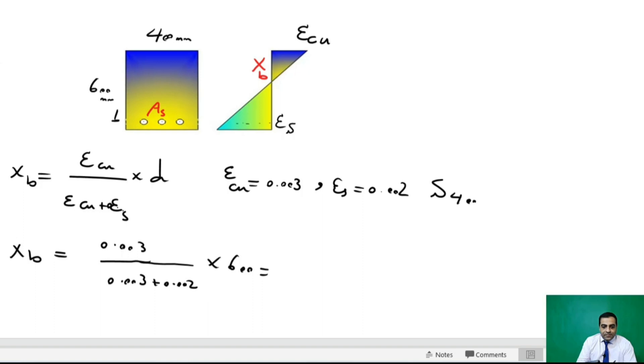We have here times 600 equals 360. We calculate the depth of the neutral axis from top, which means that our axis begins from here, below, 360 millimeters from this axis.